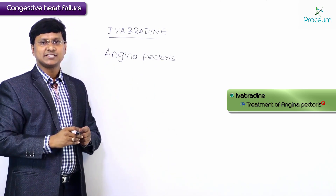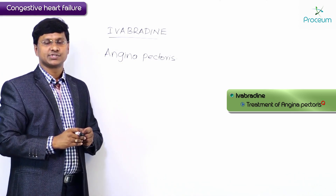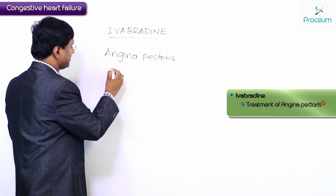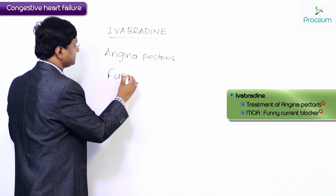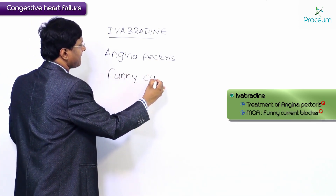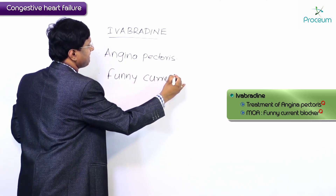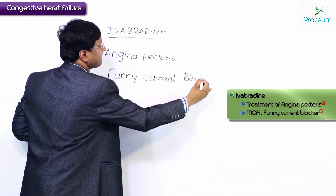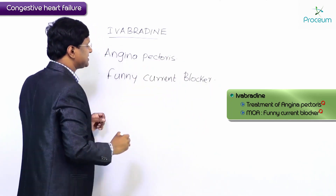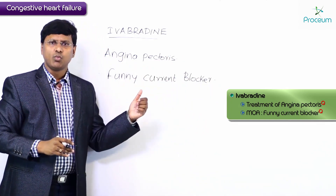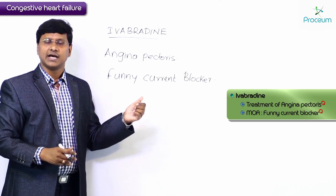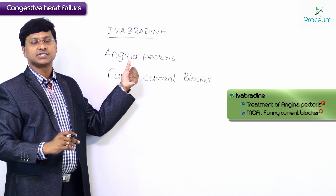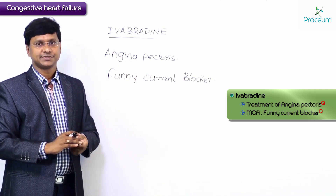The mechanism of action of ivabradine is that it is a funny current blocker. The details of this funny current blocker will be discussed when covering the pharmacology of drugs in angina pectoris.